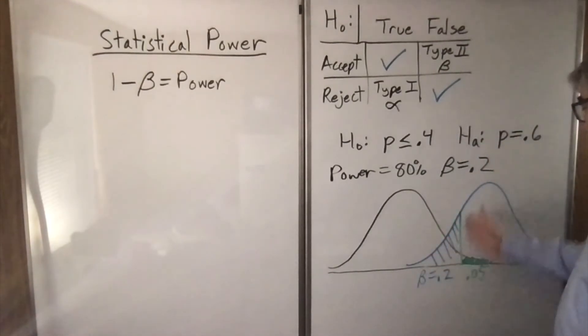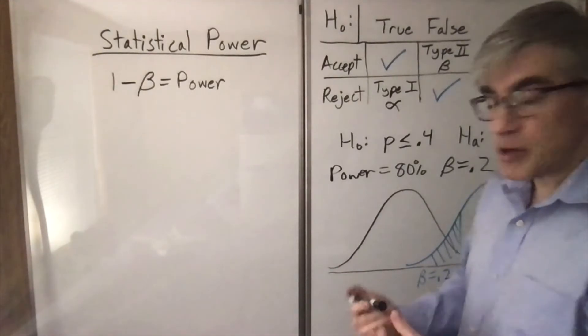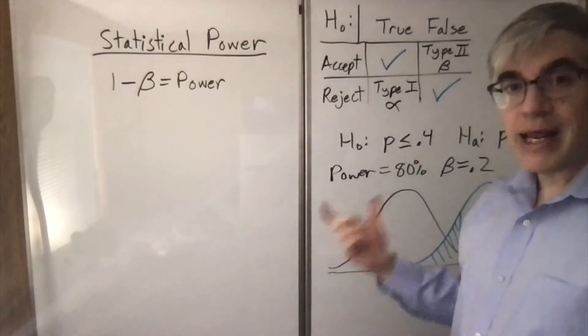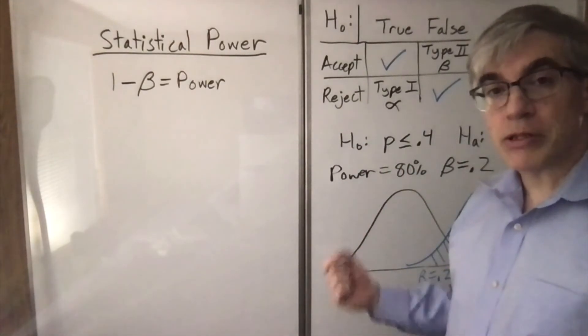If our observed result is greater than this critical value, we will reject the null. So this is the rejection region for the null hypothesis. The narrowness of the curves is going to determine whether we can tell them apart or whether they're all blurred together, and you can narrow a proportion curve by choosing a larger n.